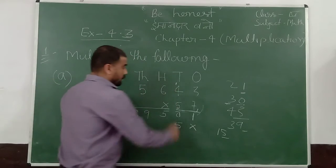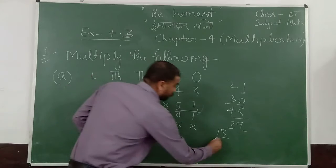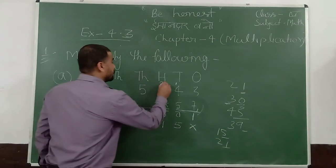5 into 4 is 20. 20 plus 1 is 21. Put 1 here. And 2 is carry.